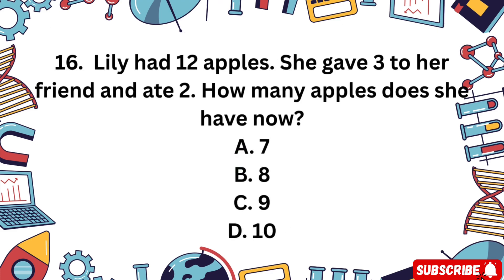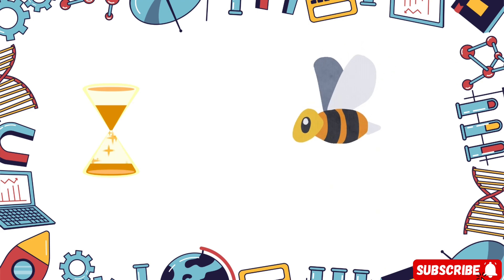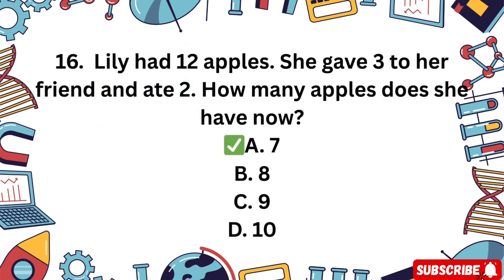Question 16. Lily had 12 apples. She gave away 3 and ate 2. How many does she have now? A 7, B 8, C 9, D 10. Add and subtract carefully. You have 5 seconds. The correct answer is A 7. 12 minus 3 minus 2 equals 7.